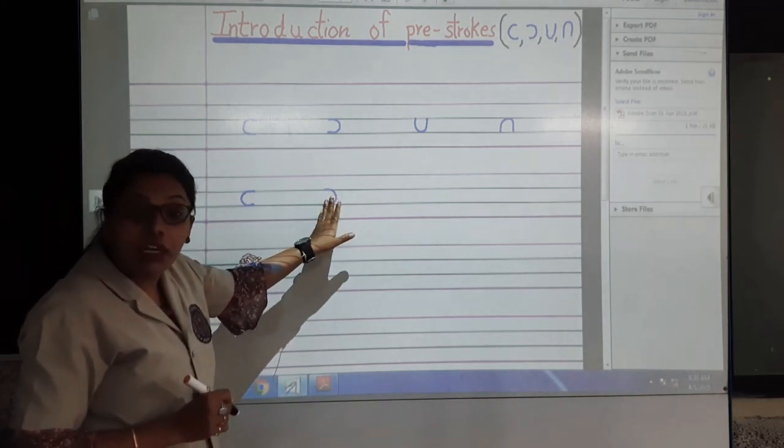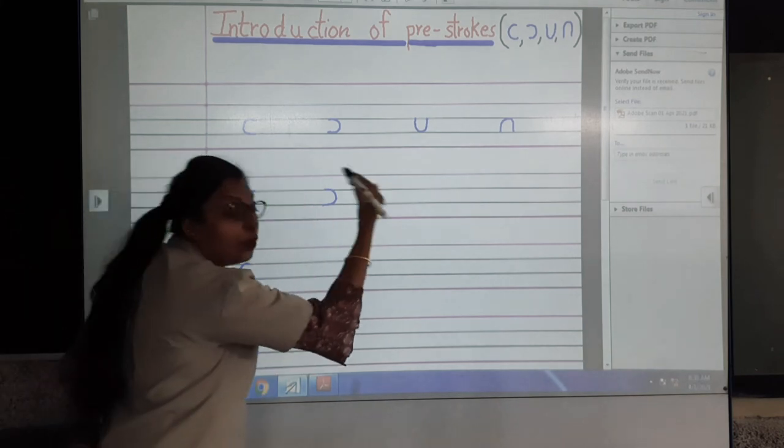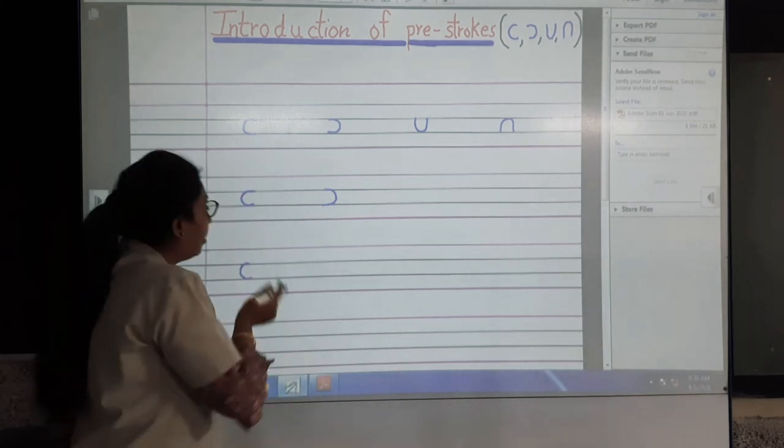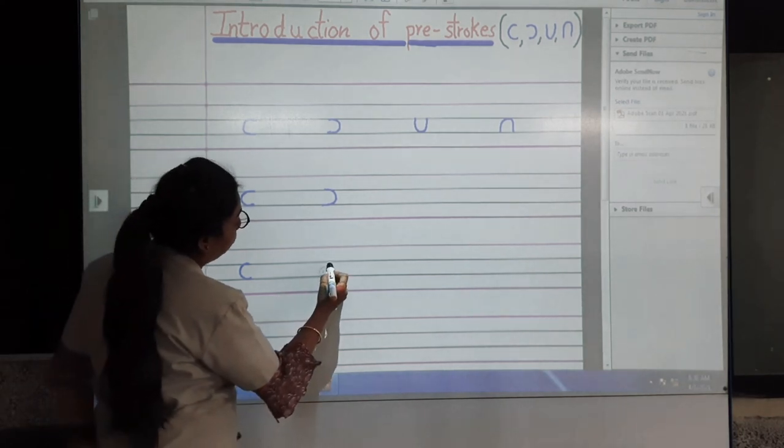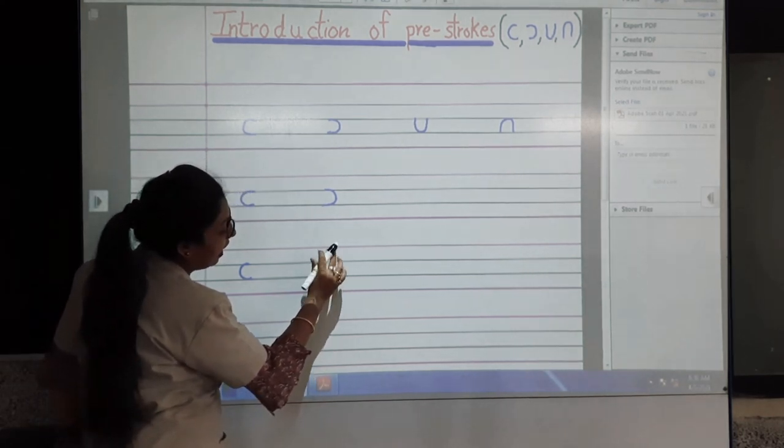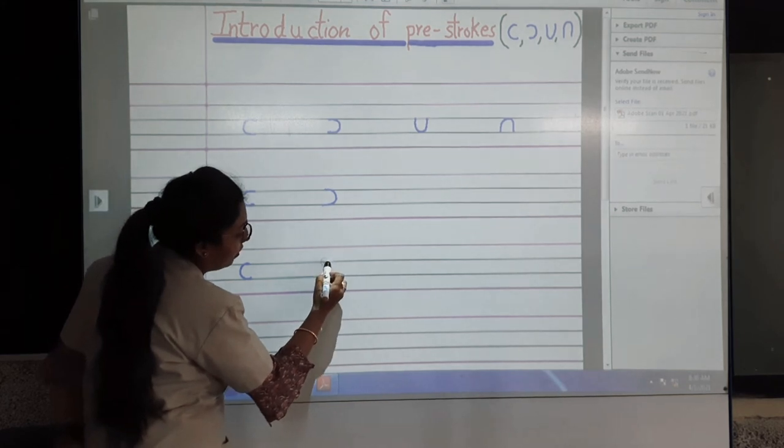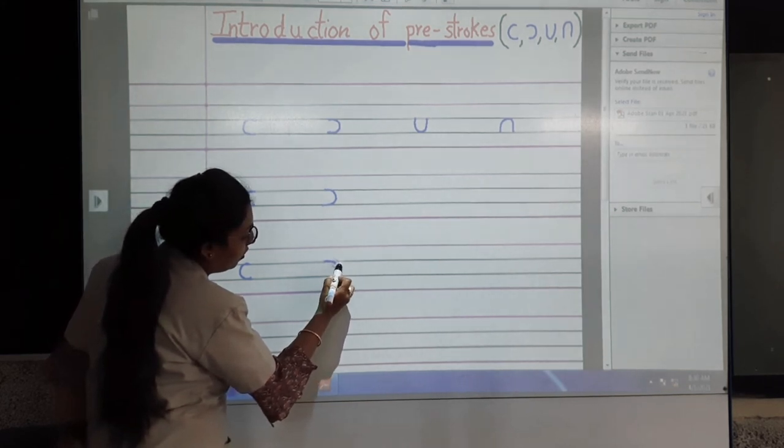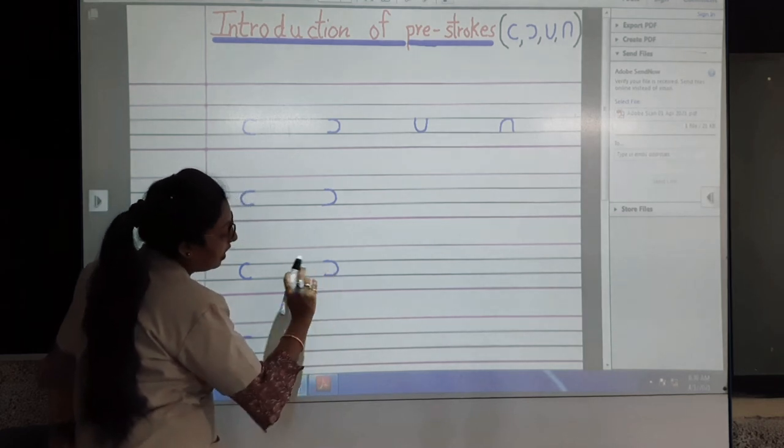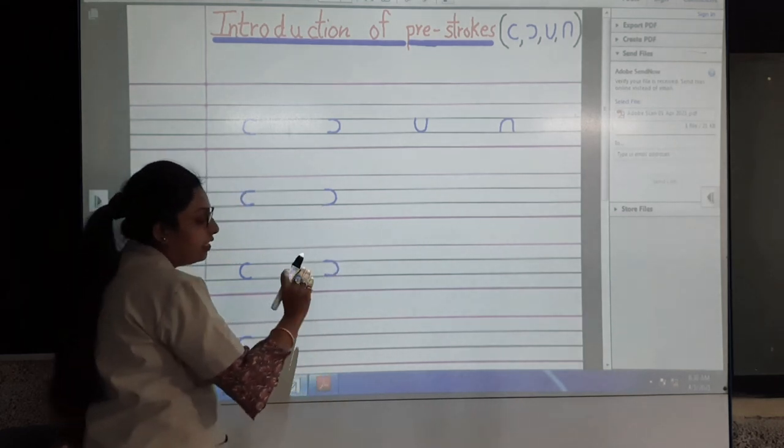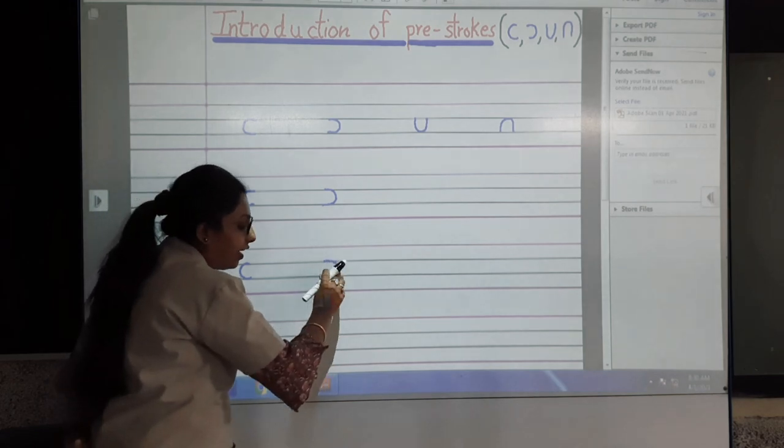In which direction? In right direction, C in left direction. Again from the second line, first, second, to the third line. Now see direction, then right side, right side, right to stop.